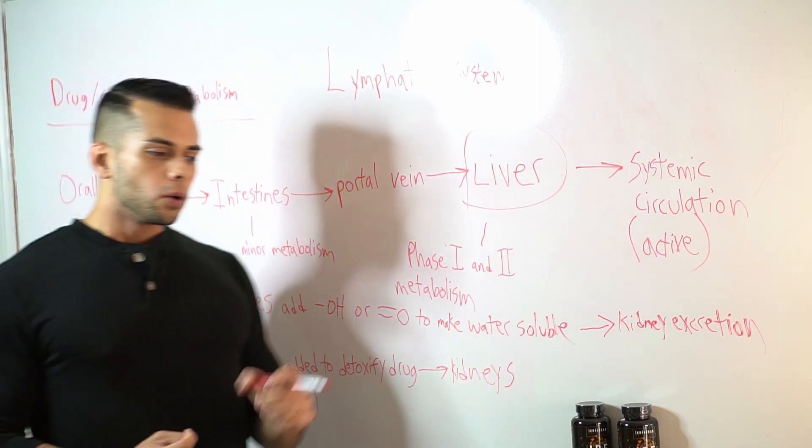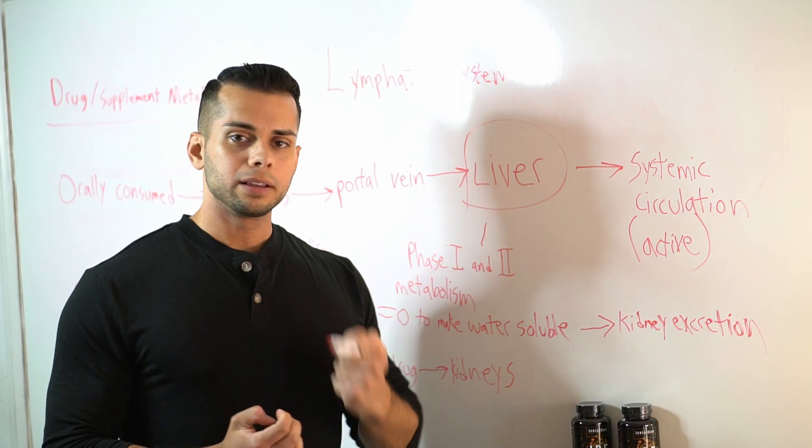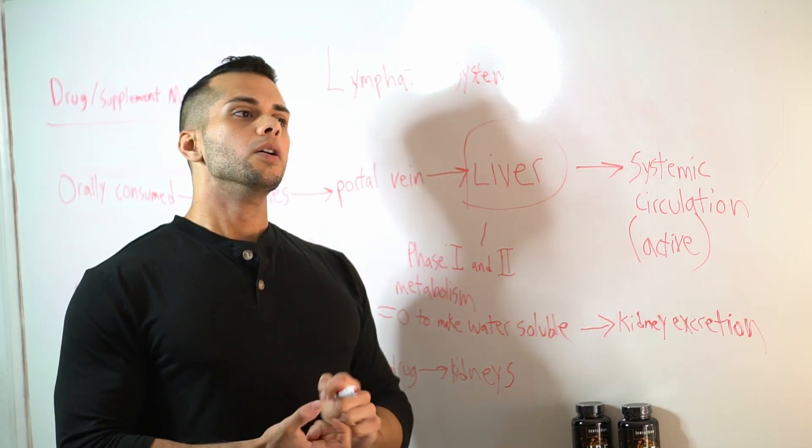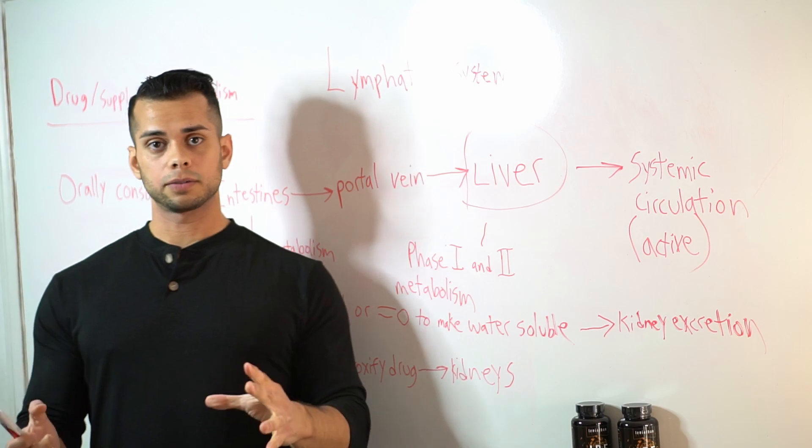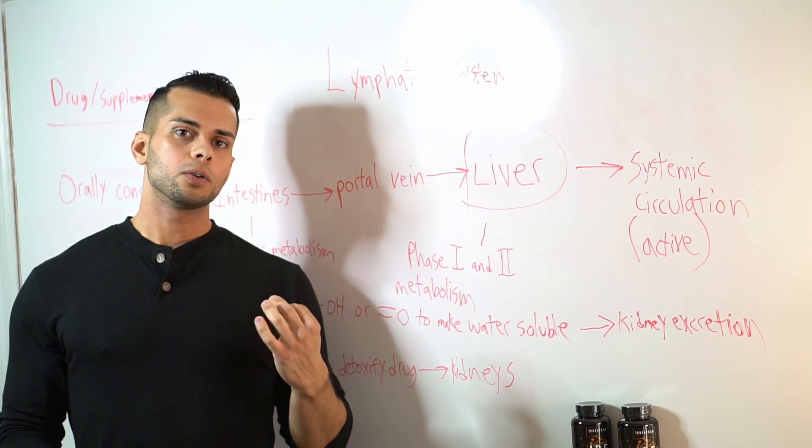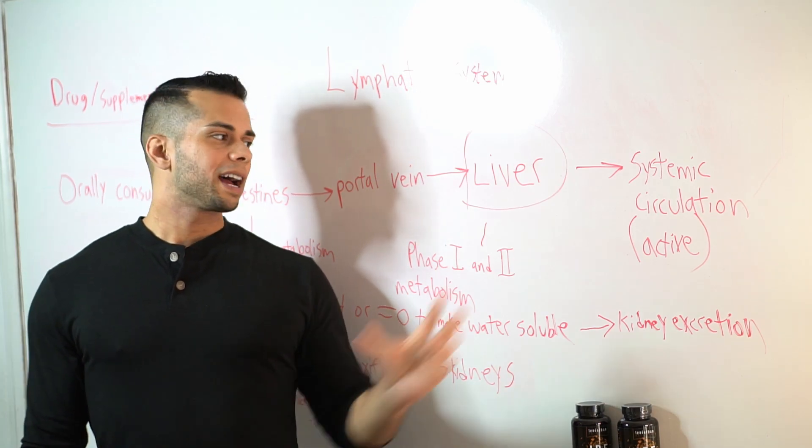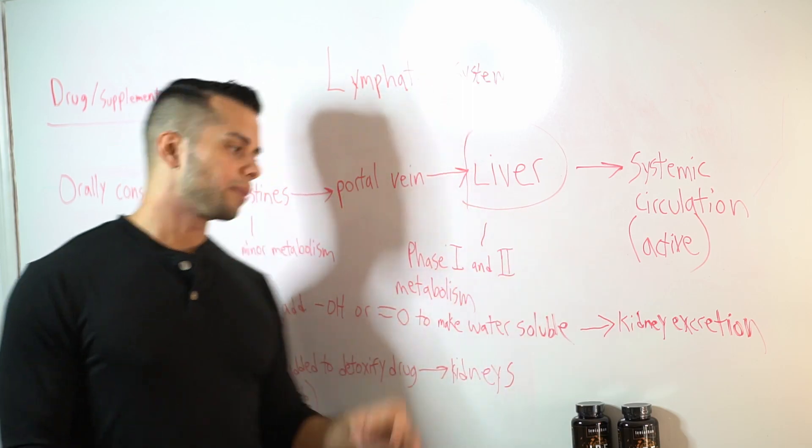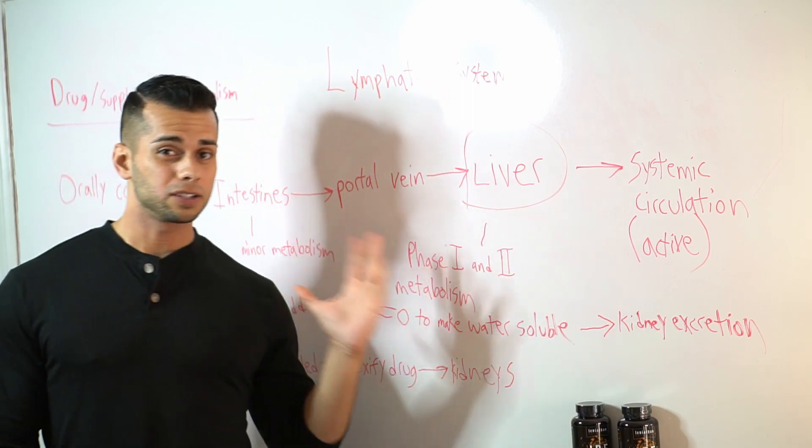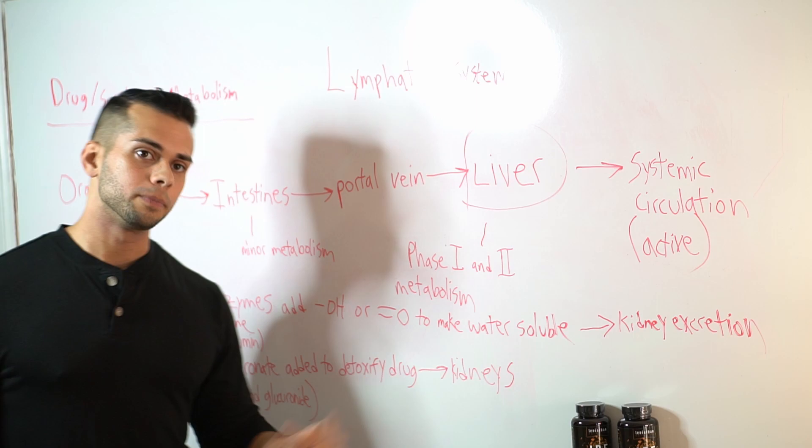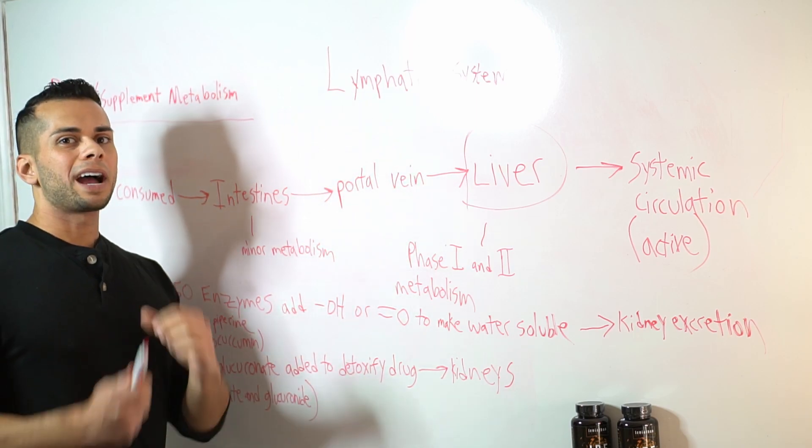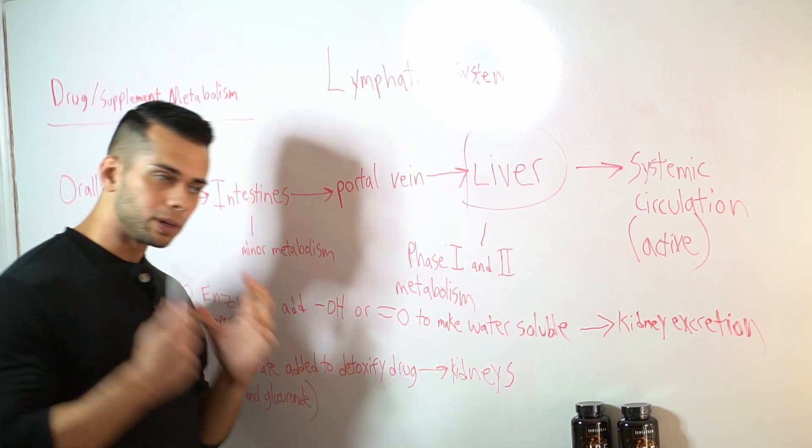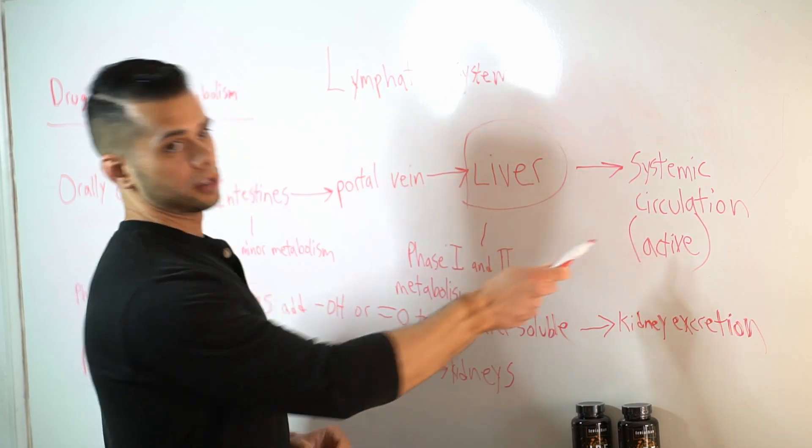So ideally, whenever we choose a nano-encapsulating formula, what we want to do to maximize the effects of curcumin is find a way in order to bypass this liver metabolism by phase one and, more importantly, phase two drug metabolism, to keep as much active curcumin as we can in systemic circulation.